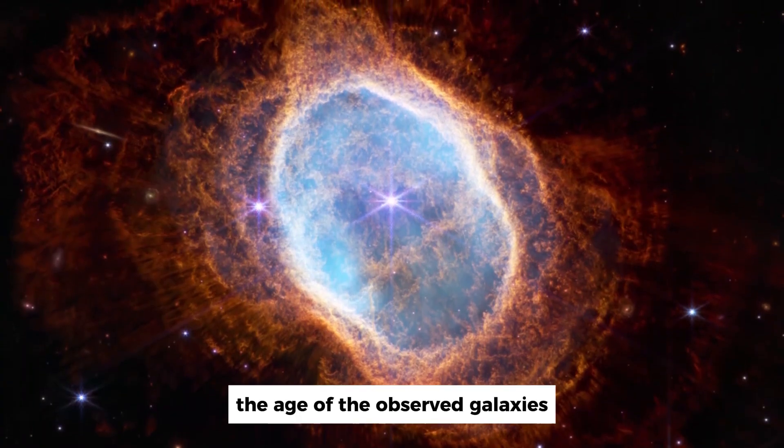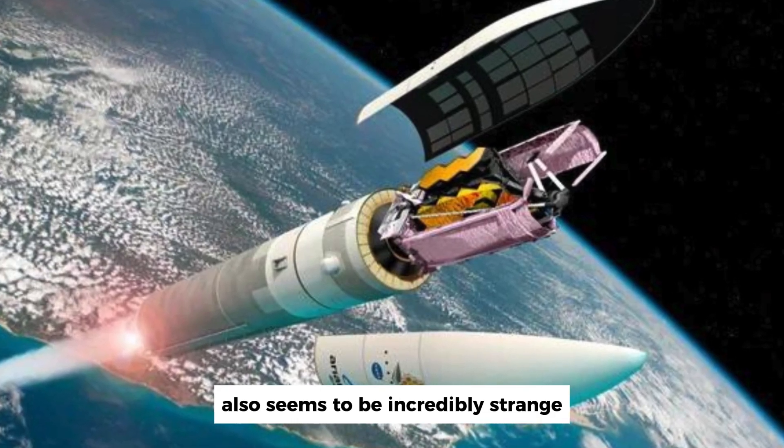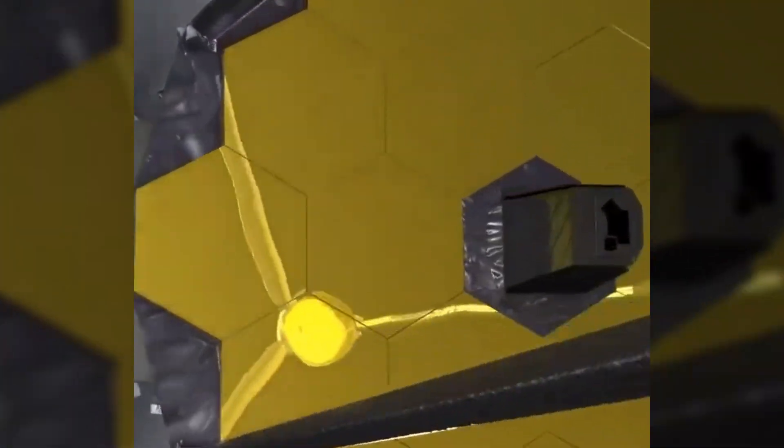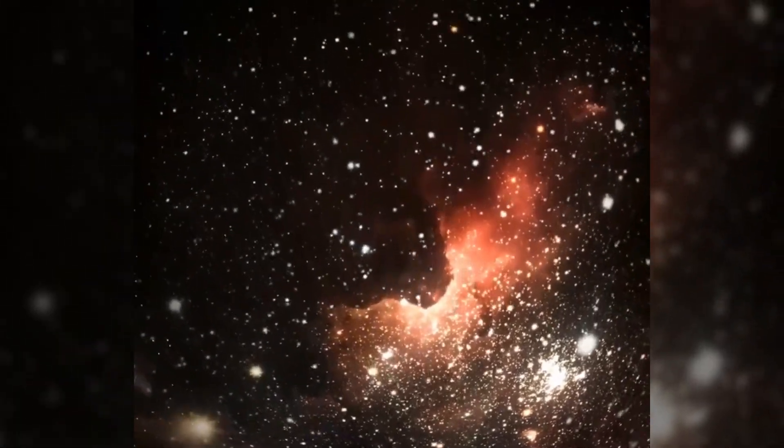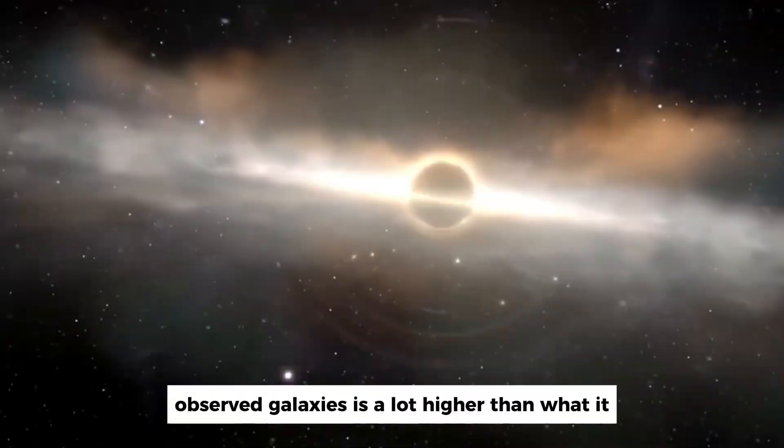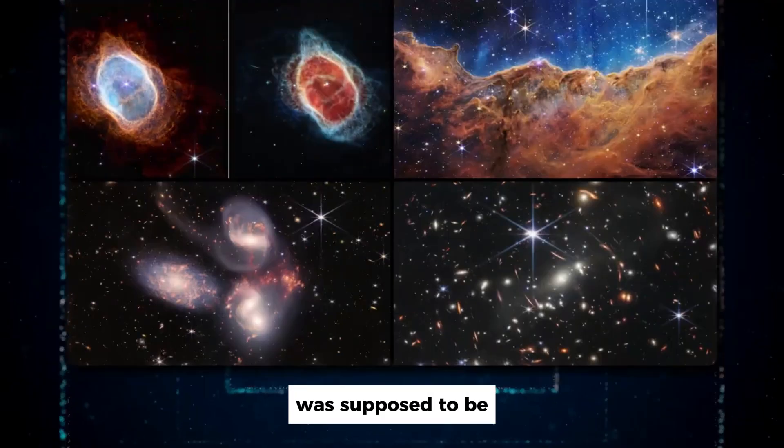The age of the observed galaxies also seems to be incredibly strange. The James Webb Space Telescope is upsetting the apple cart. All of a sudden, we realize that we may have to rewrite all the textbooks about the beginning of the universe. It takes many billions of years to create. Plus, there's also the fact that the abundance of observed galaxies is a lot higher than what it was supposed to be.